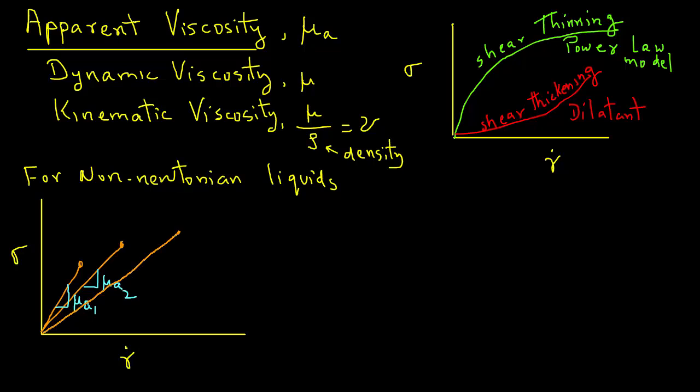We repeat the experiment and find another point, where again going to the origin, we find mu A3. We will notice that the second viscosity value will be lower than the first, the third lower than the second. In other words, the liquid is becoming thinner—viscosity is decreasing as we increase the shear rate.